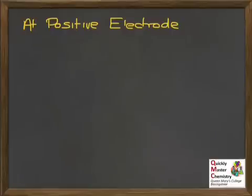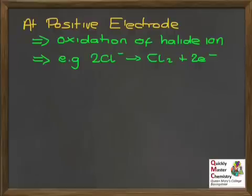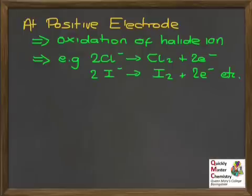In redox terms, at the positive electrode, halide ions — which are negative — are attracted and oxidised. A typical half equation for chloride ions shows exactly the same process as reacting with a more oxidising halogen: electrons are pulled off, oxidising the chloride ions to chlorine gas. This can equally be done with iodide ions, oxidising them to iodine. There is no difference in the half equation when oxidising a halide ion — whether you use a more oxidising halogen or electrolysis, the same redox process occurs.